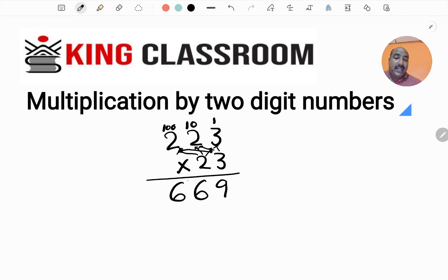Now multiply the 2 from 10's place in 23 with 223. Since 2 is in the 10's place, we start the result from 10's place. We can put 0 in 1's place or leave it. The multiplication result starts from 10's place.